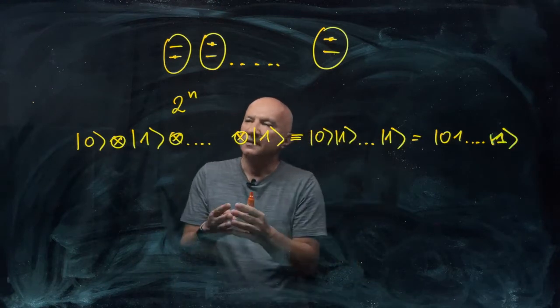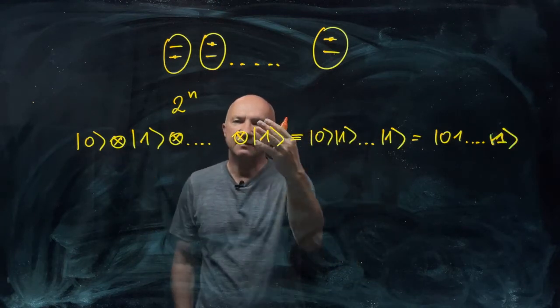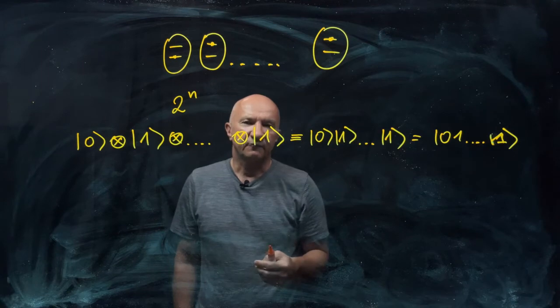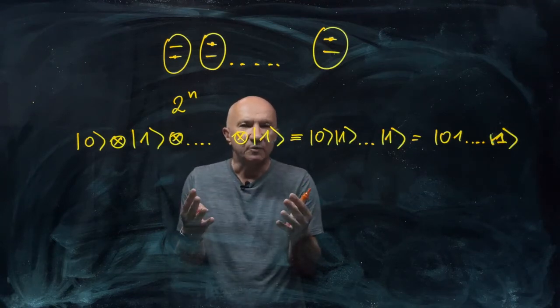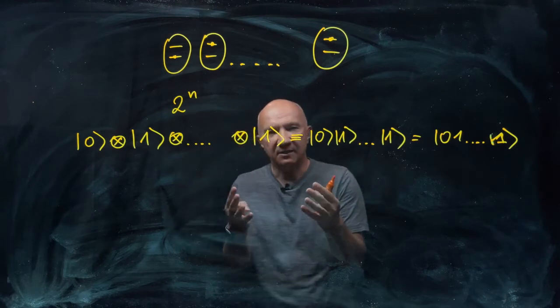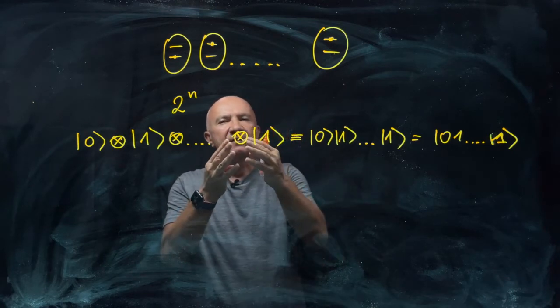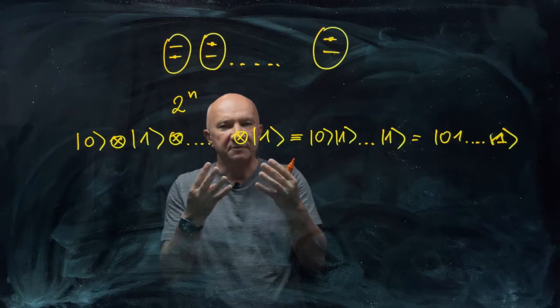So the thing is that all together, there are 2 to the n configurations, so there are 2 to the n basis states for n qubits. So mathematically speaking, they live in the Hilbert space of dimension 2 to the n.